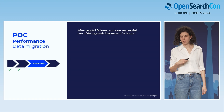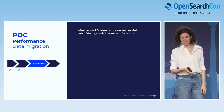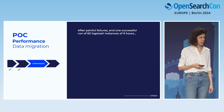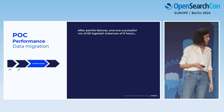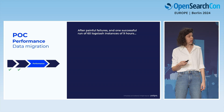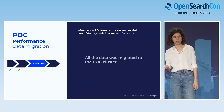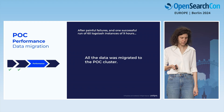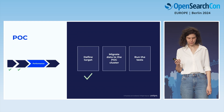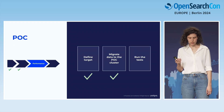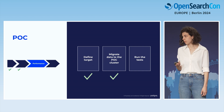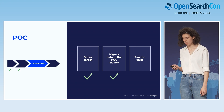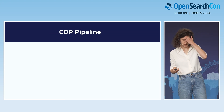After painful failures, one successful run of 60 Logstash instances over nine hours migrated all the data to the POC cluster.